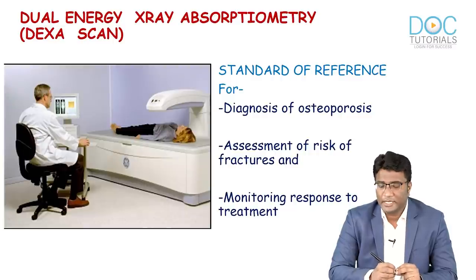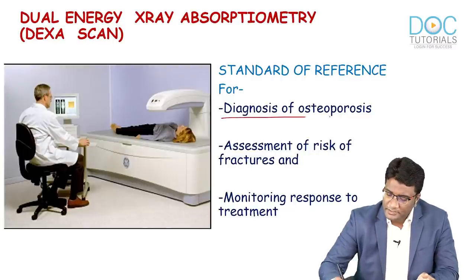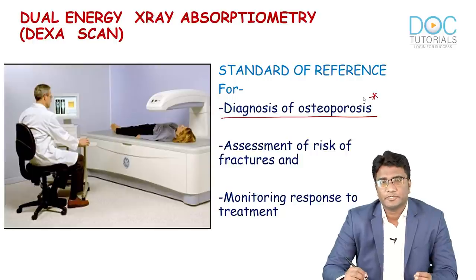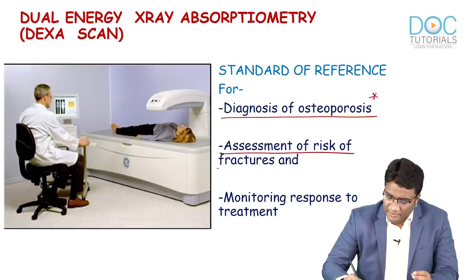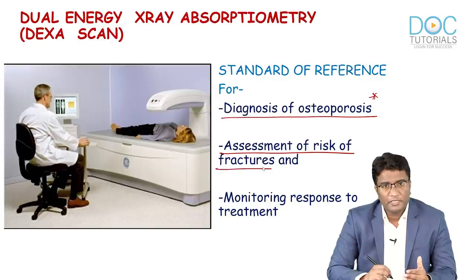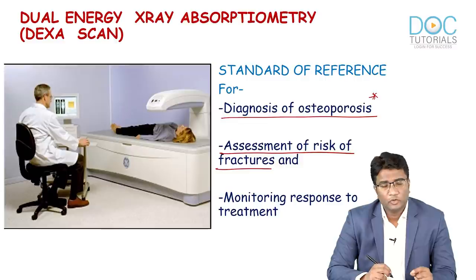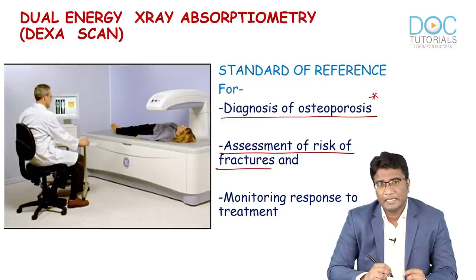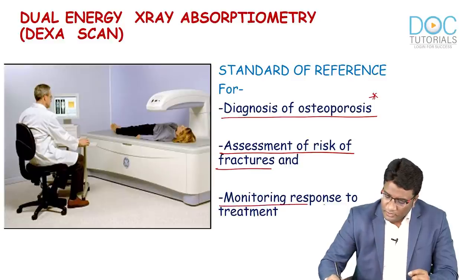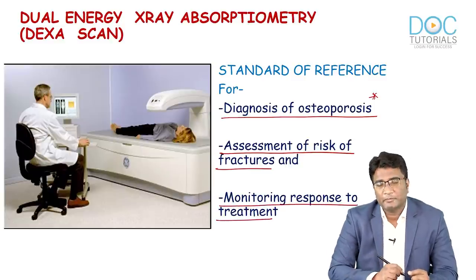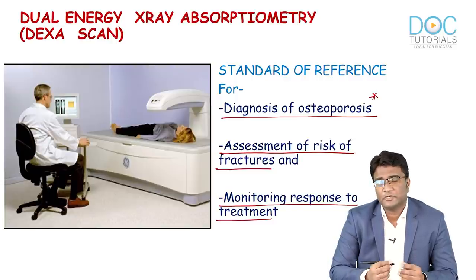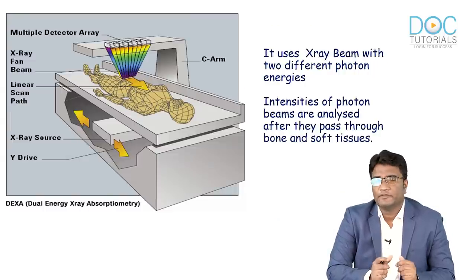DEXA scan is the standard reference for diagnosis of osteoporosis. It is used to assess the risk of fractures — for vertebral fractures we get a spine DEXA, and for fracture neck of femur we get a hip DEXA. It is also useful in monitoring response to treatment, such as after starting bisphosphonates. Now let's understand the technique of DEXA scan.